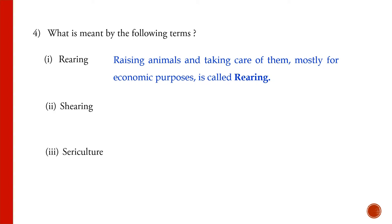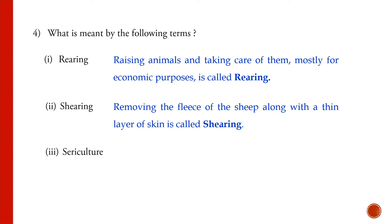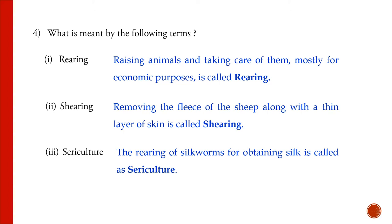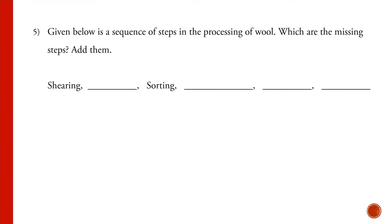What is meant by the following terms: rearing, shearing, and sericulture? Rearing means raising animals and taking care of them — giving them food and taking good care for economical purposes, to get products like wool or milk. Shearing means removing the hair of the sheep along with a thin layer of skin. Sericulture means the rearing of silkworms for obtaining silk.